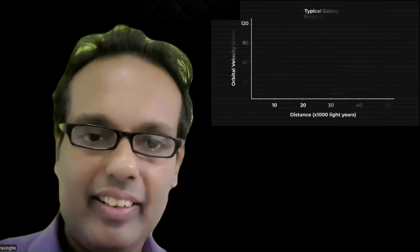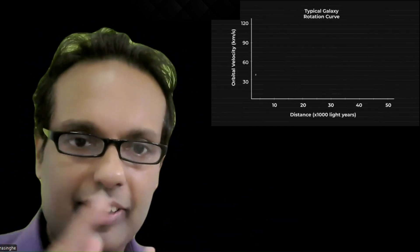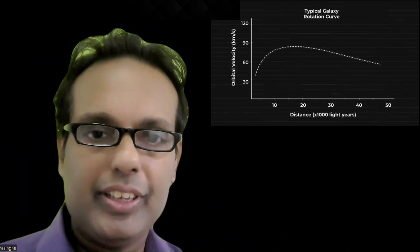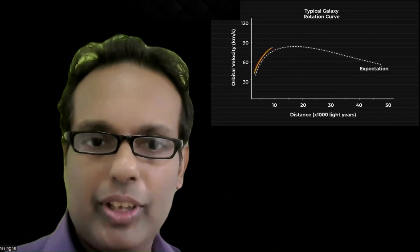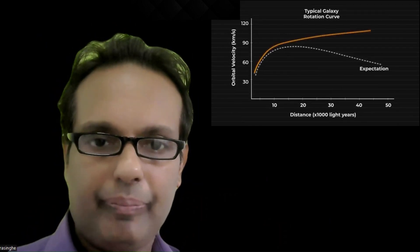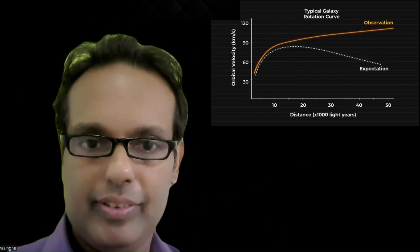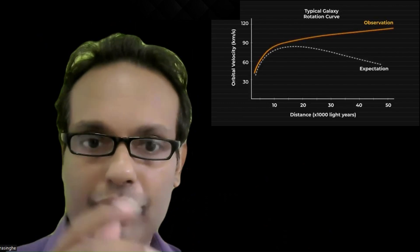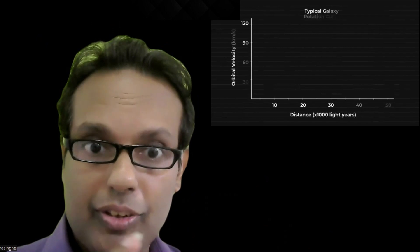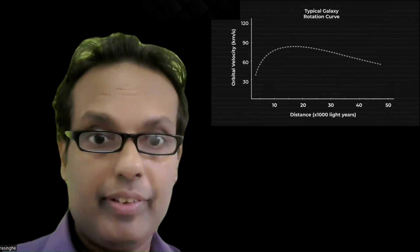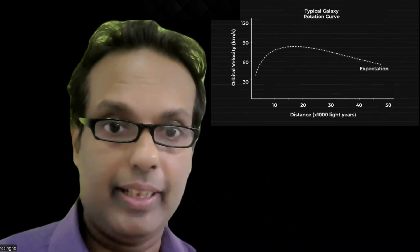Dark matter is indirectly detected by gravitational lensing and galaxy rotational curves. Today I am going to talk about galaxy rotational curves. Most of you might be familiar with gravitational lensing. Galaxy rotation curves are rare, but there are a few times they have given it in the exam.